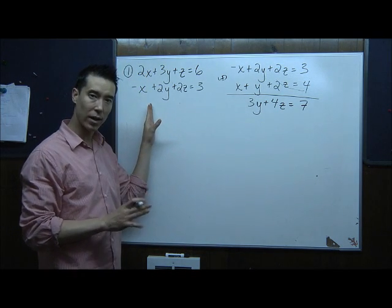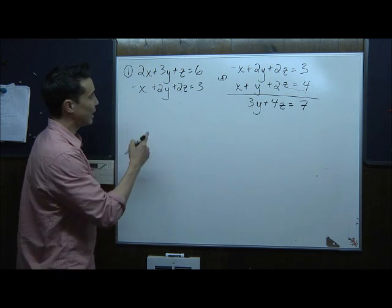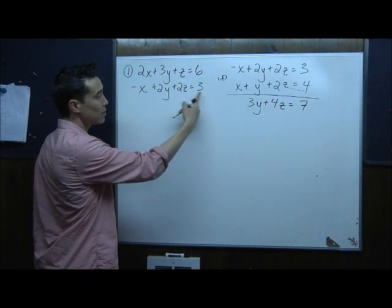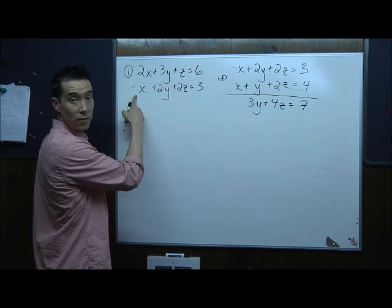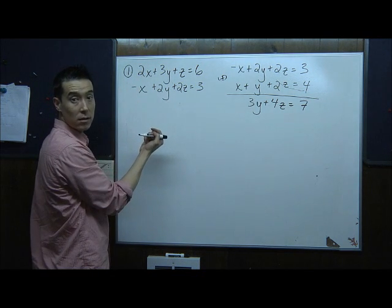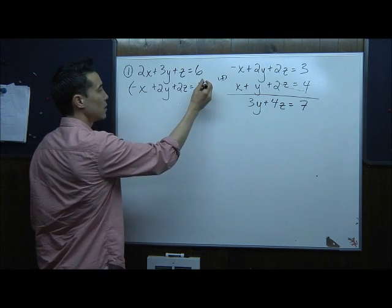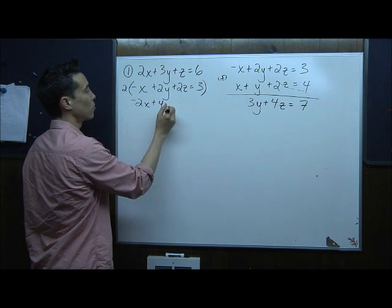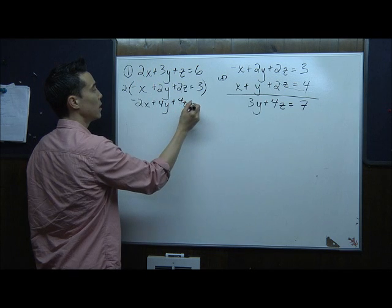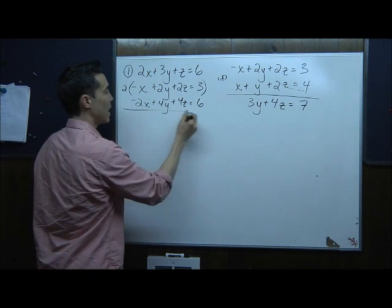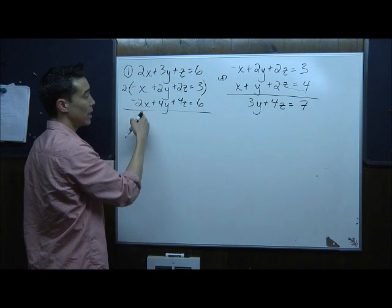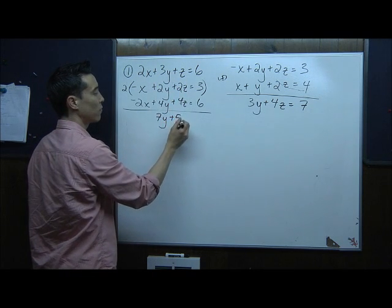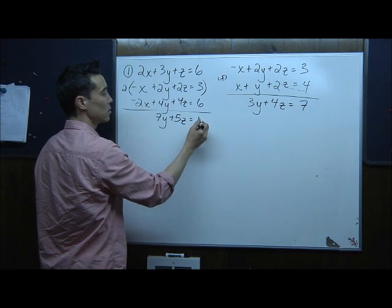I want to add these equations to eliminate the x variable. I have a positive 2x and a negative x, so that's not quite going to work. But if I multiply the second equation by 2, that will produce a negative 2x. So multiplying through by 2 gives me negative 2x, positive 4y, positive 4z, and positive 6.